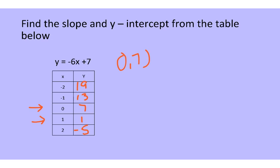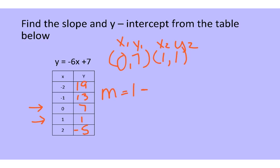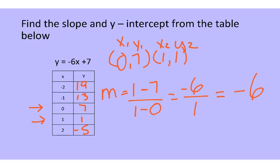I'm going to take (0, 7) and (1, 1), calling them x1, x2, y1, y2. Plugging into the formula: slope equals y2 minus y1 over x2 minus x1. You have to keep these in order — x2s and y2s first — because if you don't, you'll get the sign of the slope backwards. So 1 take away 7 is negative 6, over 1 take away 0 which is 1. The slope is negative 6. The y-intercept is 7, from the 0 x-value.